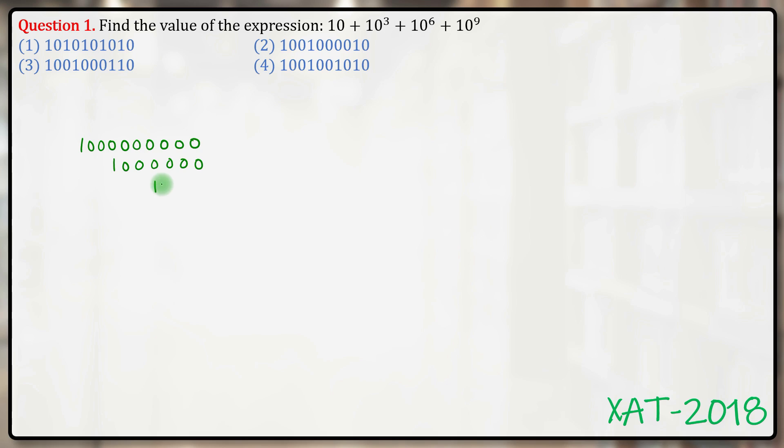10³ that is 1 followed by 3 zeros and 10. So while I can do this, I add them and I would get my answer as 1001001010. That should be the answer. Can I see that? Yes, that is out there. Answer option 4.